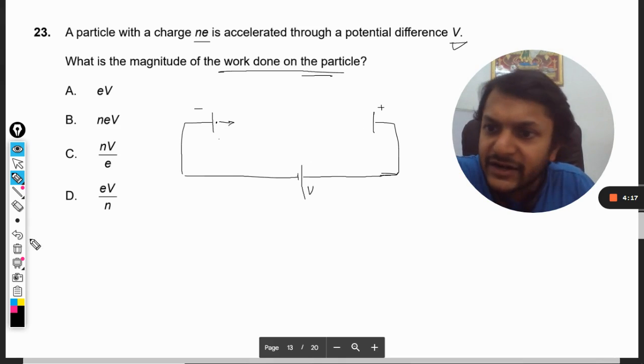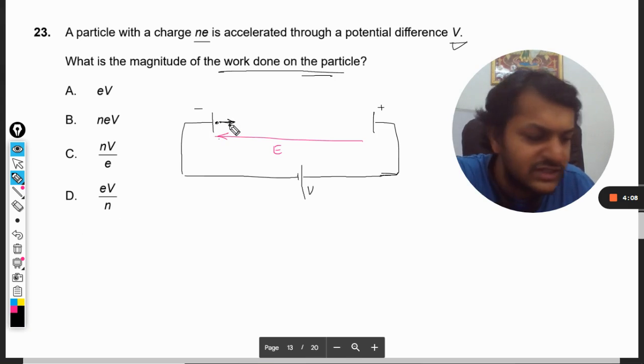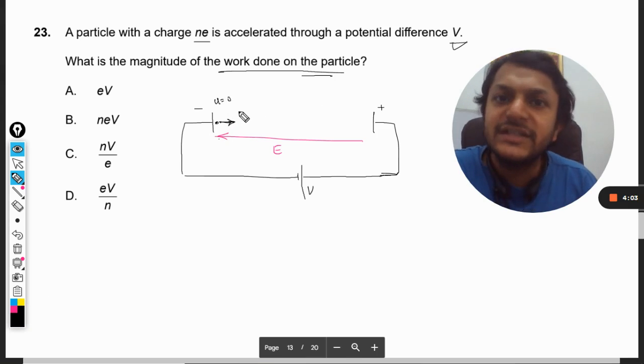There will be an electric field moving from positive to negative, so the electron will try to move towards the positive terminal. Initially the kinetic energy is zero, velocity is zero.